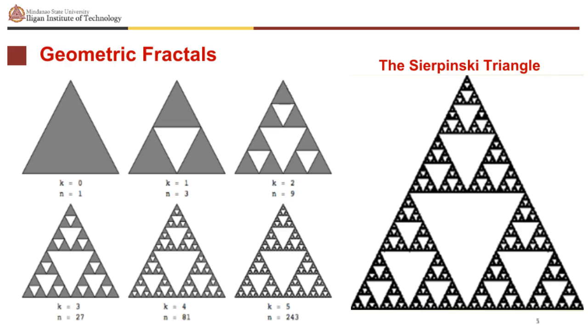It is easy to check that the dimensions of the triangles that remain after the kth iteration are exactly one over 2 to the k of the original dimensions as can be seen from the figure.